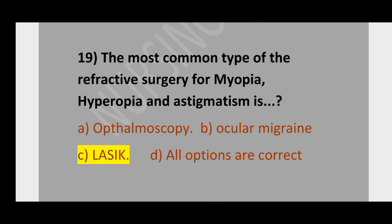Question number 19. The most common type of refractive surgery for myopia, hyperopia, and astigmatism is: option A, ophthalmoscopy; option B, ocular migraine; option C, LASIK; option D, all options are correct. The correct refractive surgery for myopia, hyperopia, and astigmatism is LASIK.